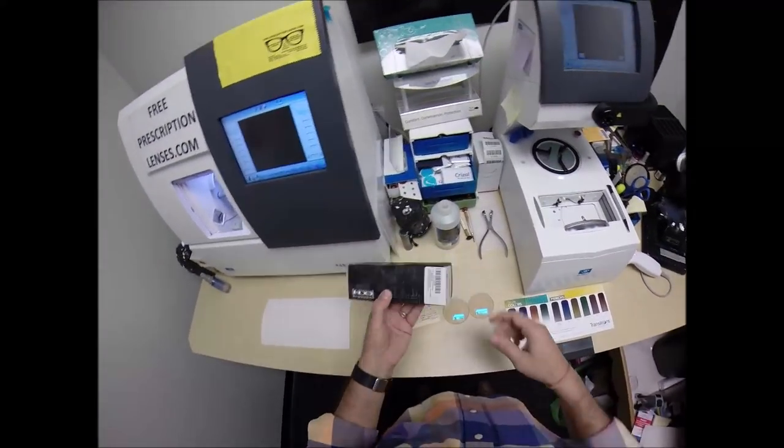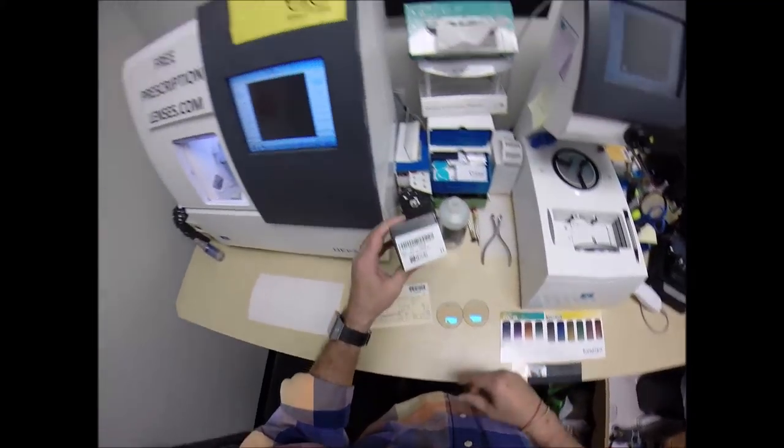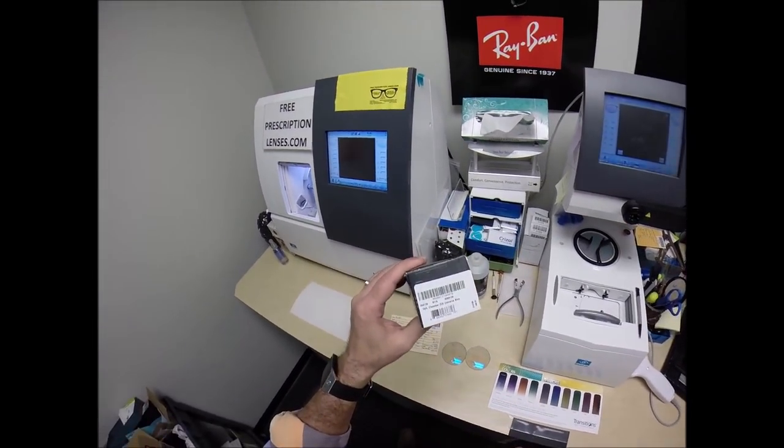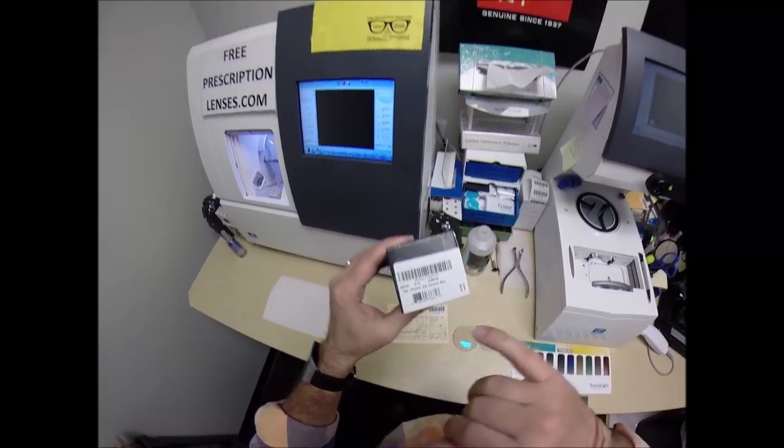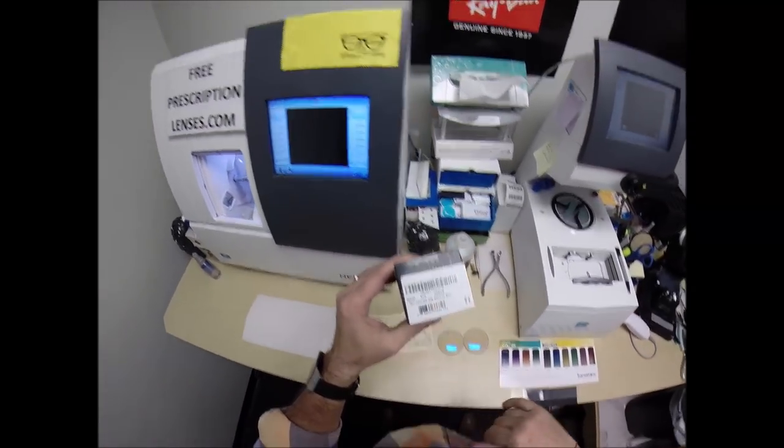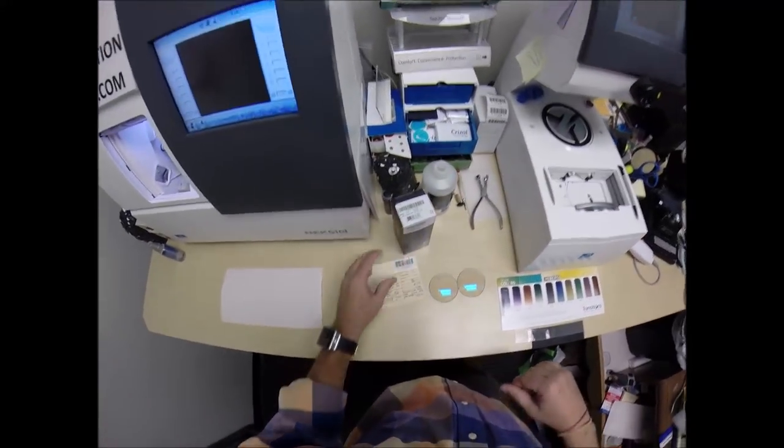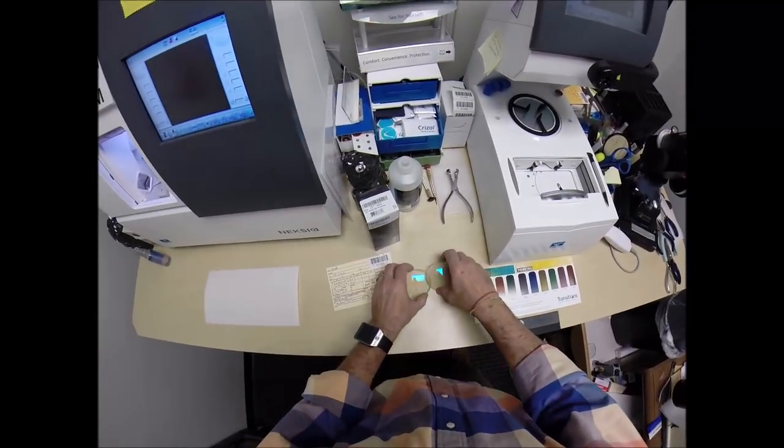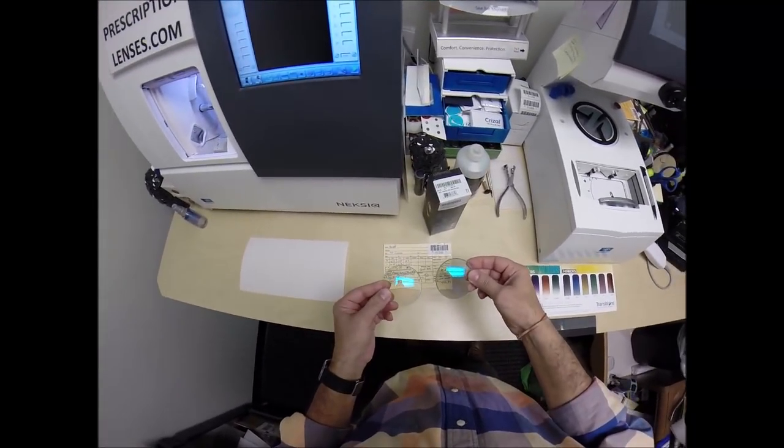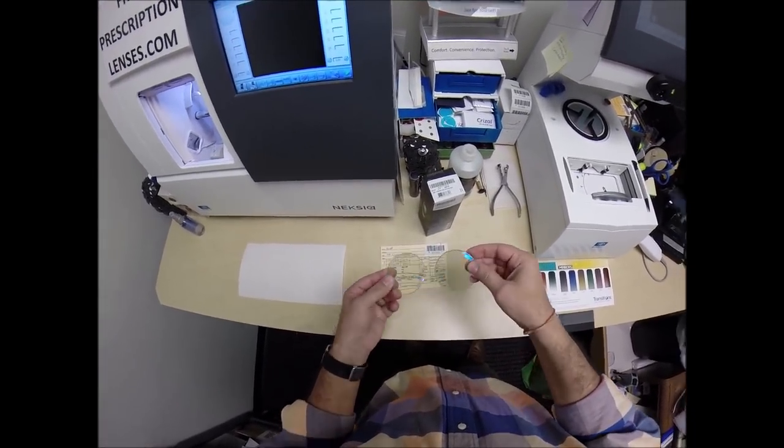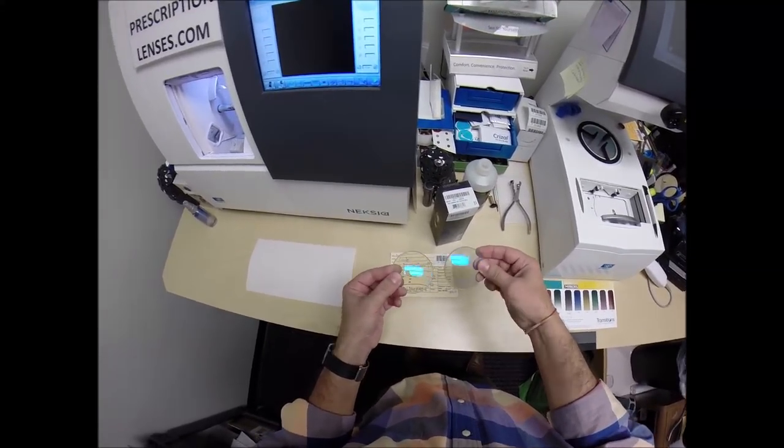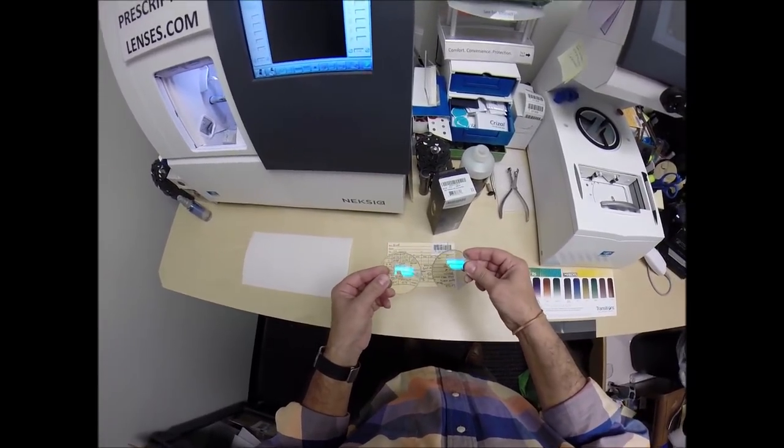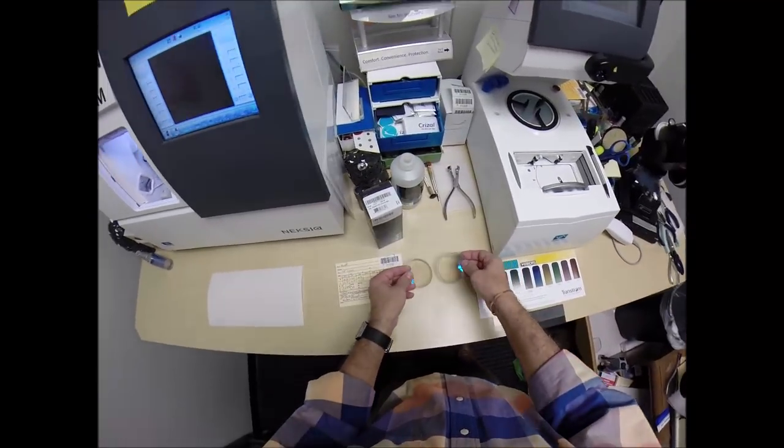I get to cut really cool lenses for a really cool frame. This is the Oakley Chamber, model number 8138 in 53 eye size, color 05 Universe Blue. I'm cutting Transitions Extra Active Gray Lenses in the Invisible Bifocal with the blue flash mirror.